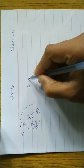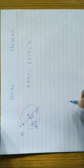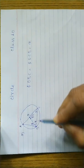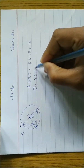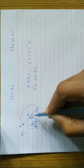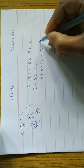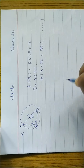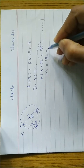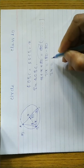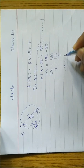Angle OBC is equal to angle OCB, both equal to x. In triangle OBC, x plus x plus 80 is equal to 180 degrees — the sum of angles of a triangle. So 2x equals 180 minus 80, which gives 2x equals 100.